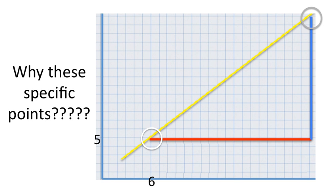Because they're easy to read. So whenever you choose points to determine the slope, choose points that are easy to read. What do I mean by easy to read? As you can see, this point here is easy to read because it's exactly at 6. And it's exactly at 5.